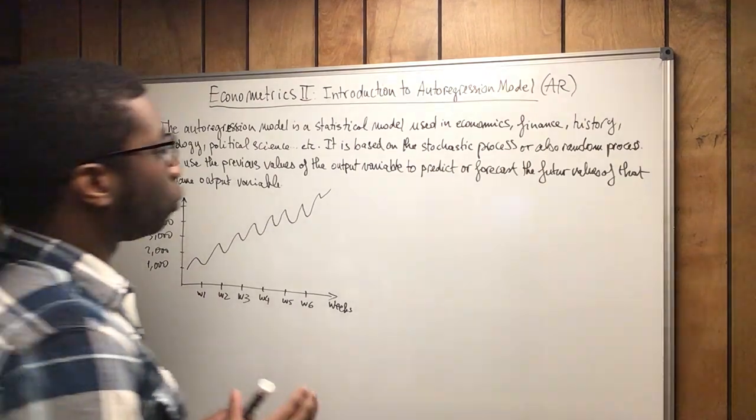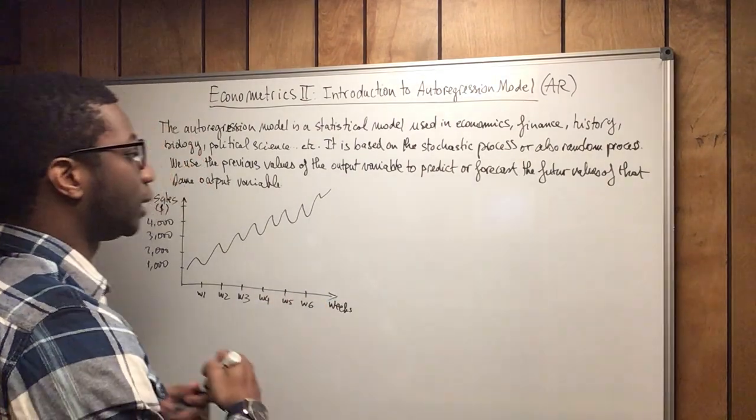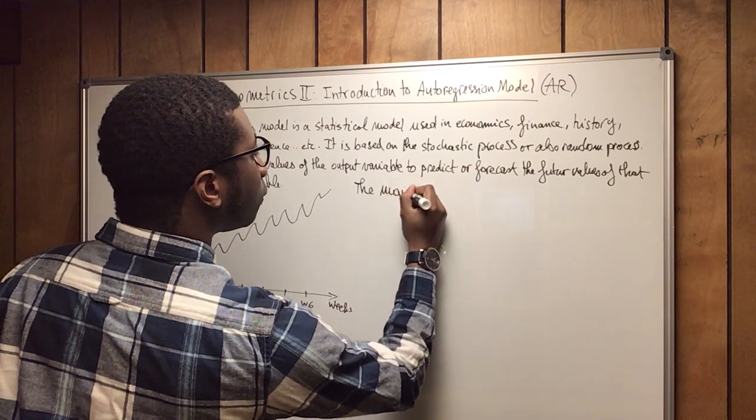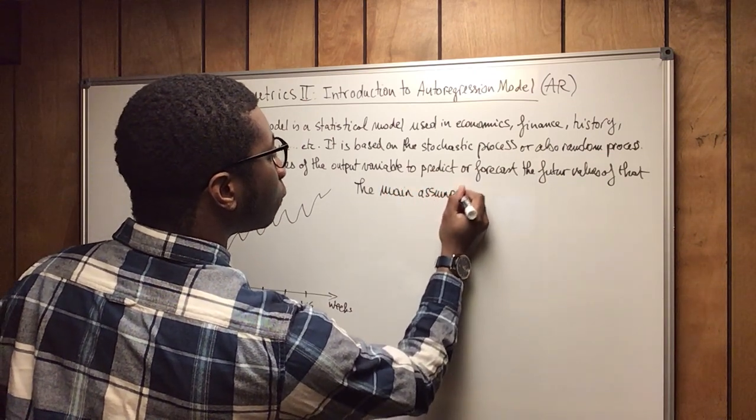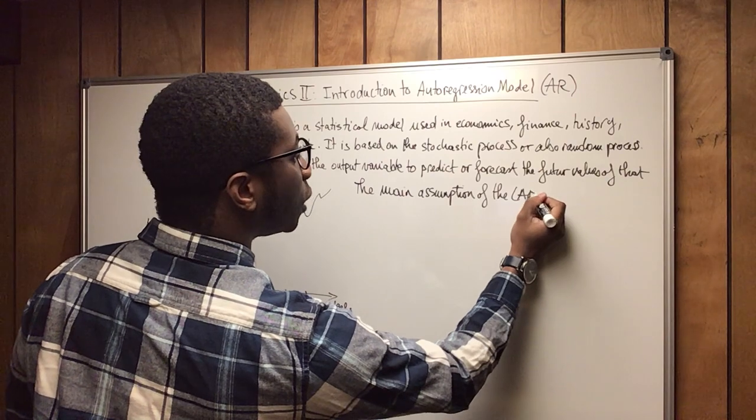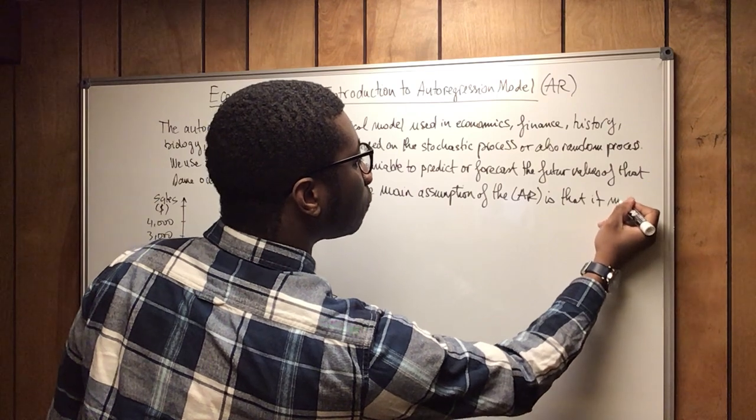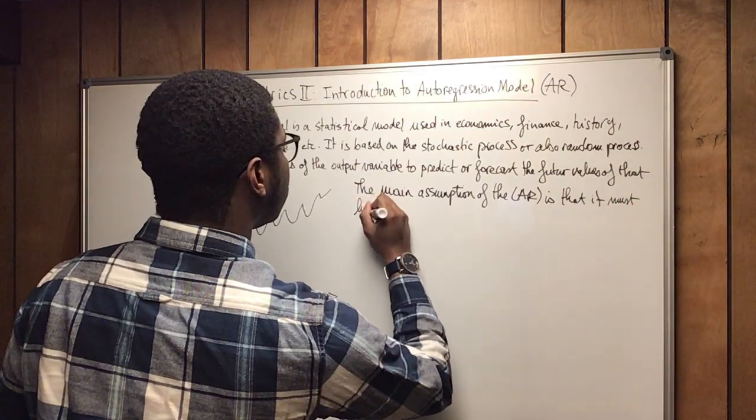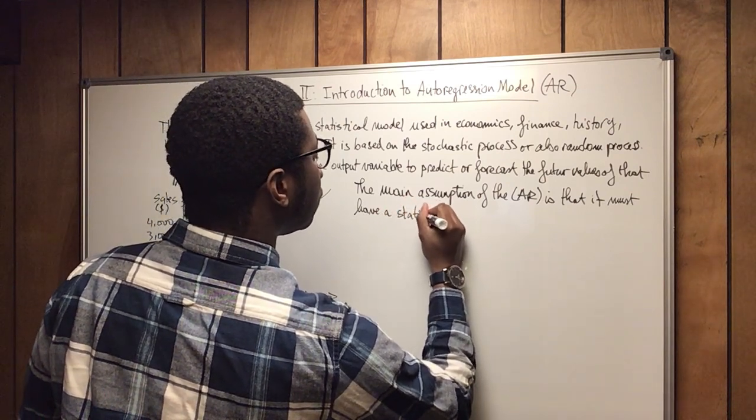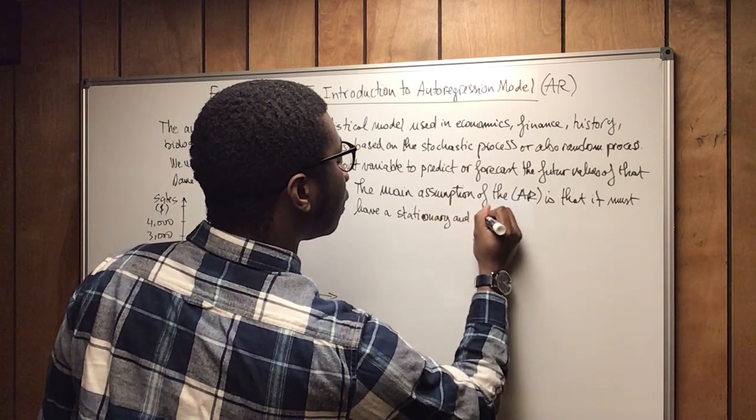So what is important to understand about the autoregression model is that it has to have a stationary trend. That is the main assumption. So the main assumption of the AR, autoregression, is that it must have a stationary and linear trend.